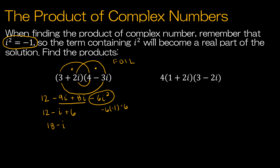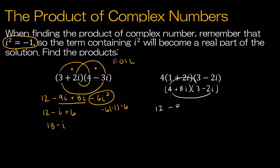For the second practice, notice I have three terms being multiplied. I can choose when to apply the 4. If I apply the 4 right away, I get 4 plus 8i, times 3 minus 2i. Make sure you don't multiply 4 by everything — that would multiply by 16 instead. Now with two binomials, I'll FOIL: 4 times 3 is 12, 4 times negative 2i is minus 8i, plus 8i times 3 is plus 24i, and plus 8i times negative 2i is minus 16i². Minus 16i² turns into plus 16, since i² is negative 1. So the final solution is 12 plus 16 = 28, and minus 8i plus 24i = plus 16i.